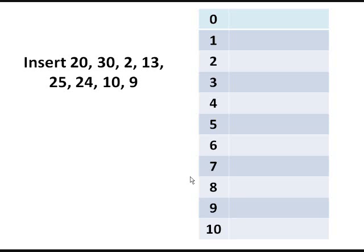So here our table size is 11. The first key to be inserted is 20. So 20 modulo 11 will give you 9. So we will insert 20 here. Then 30 modulo 11 will give you 8. So 30 here. Then 2 modulo 11 is 2.